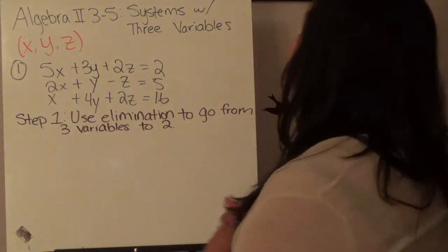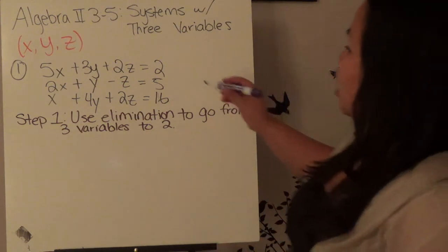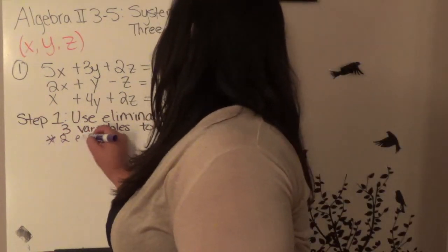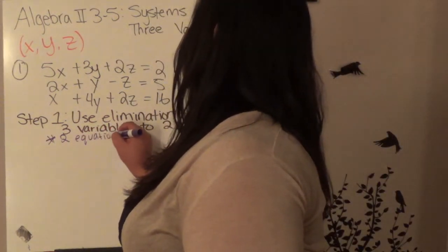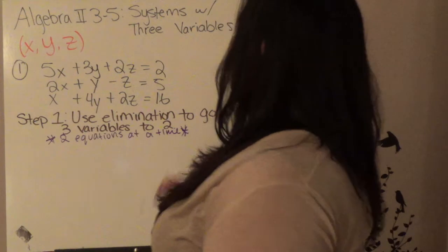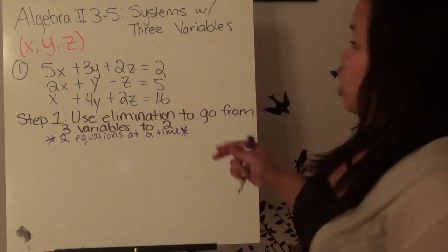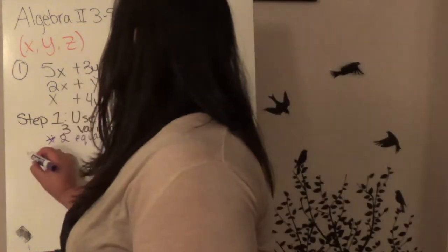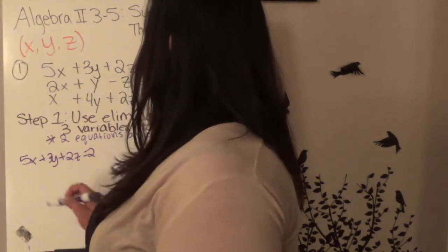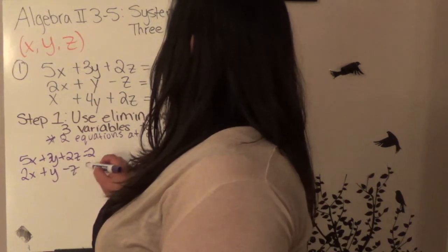Step one wants us to use elimination to go from three variables to two. That means we're going to take two equations at a time, and using elimination, we're going to eliminate the same variable from each pair. So the first two equations are: 5x plus 3y plus 2z equals 2, and 2x plus y minus z equals 5.